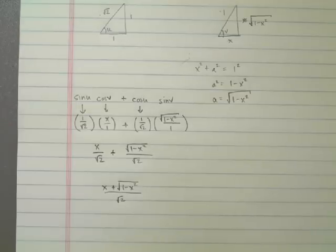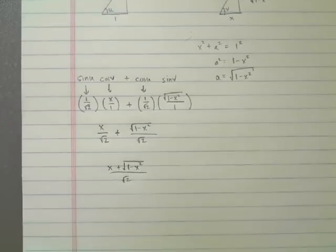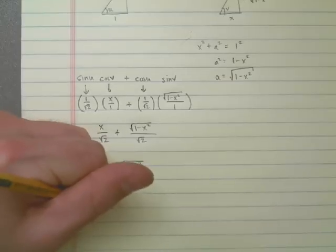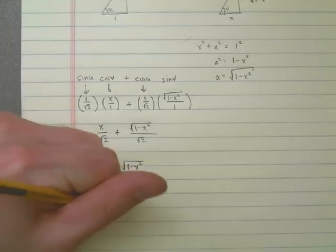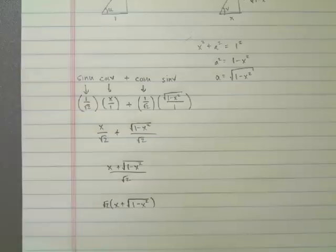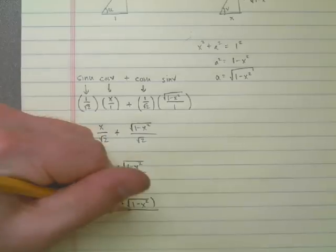And then we have one last step. We don't like having the square root of 2 on the bottom of a fraction. So instead, we're going to write it as the square root of 2 times what was originally there.